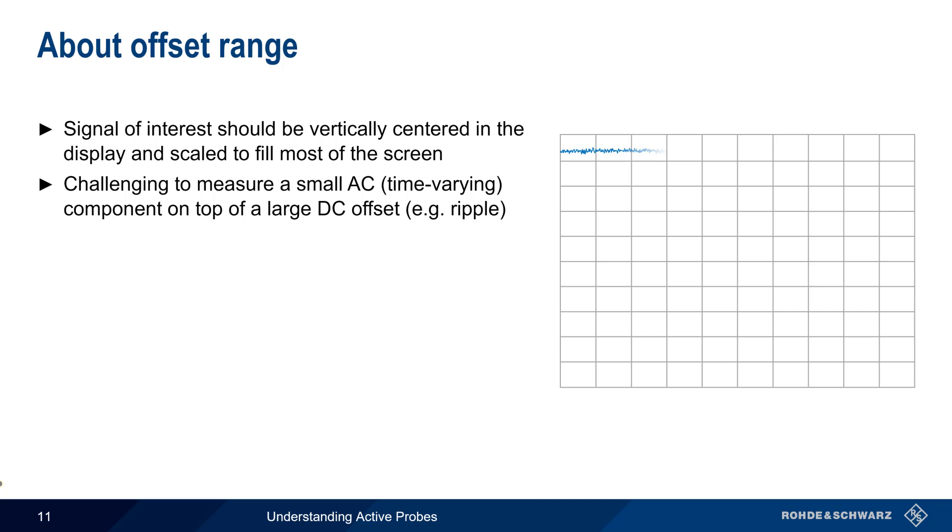It can however be challenging for signals with small AC components and a large DC offset. For example, when measuring the amount of ripple on the output of a DC power supply. One solution is to enable AC coupling on the channel in order to remove or block the DC component. But this also removes the ability to see drift.